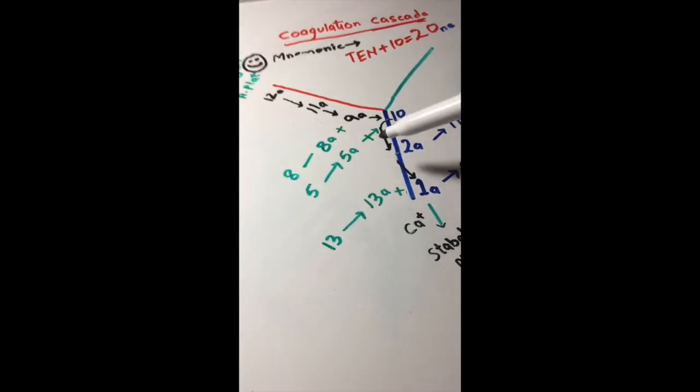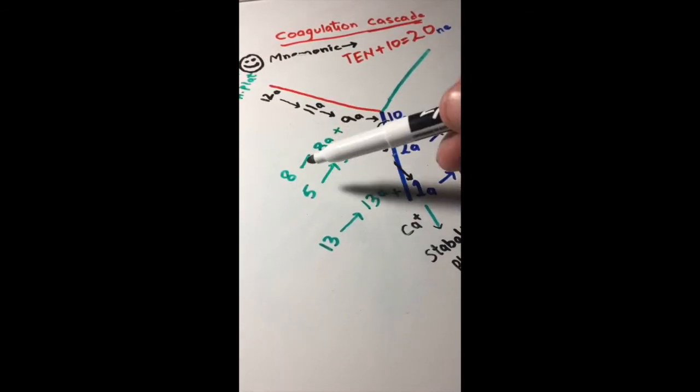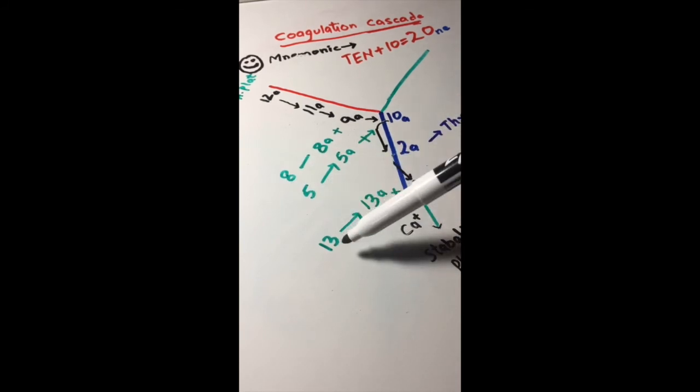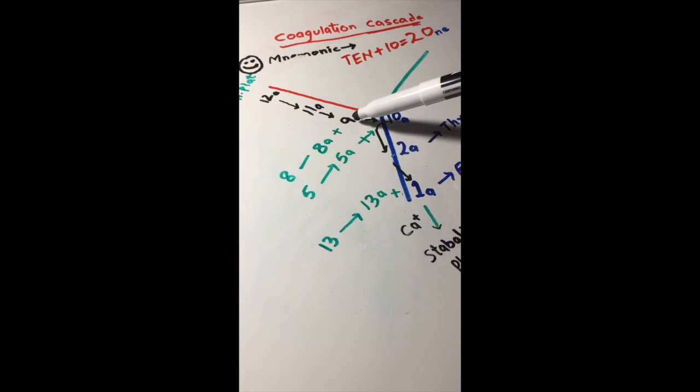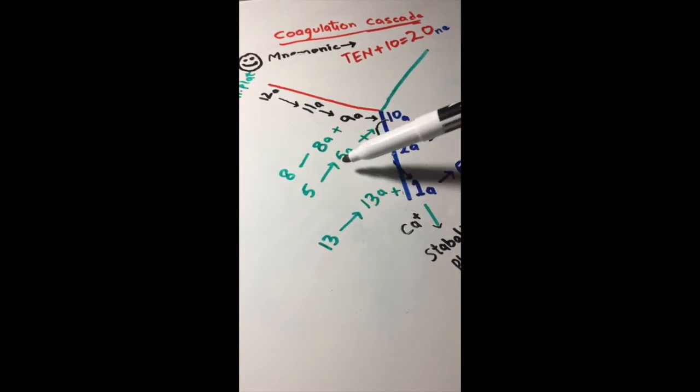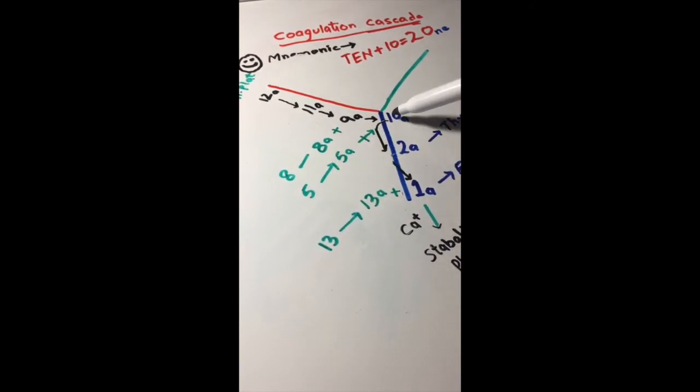We're gonna talk about some extra factors: one is 8, there is 5, and one is 13. 8 gets activated into 8a and goes with 9a. 5 gets activated into 5a and goes with 10a.